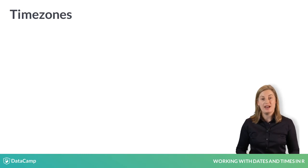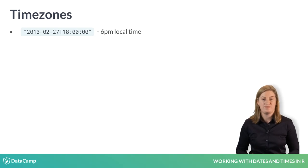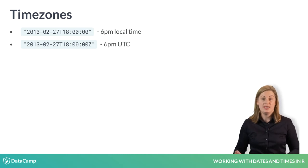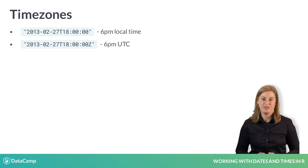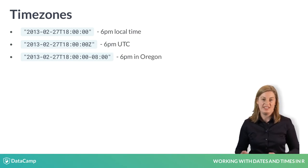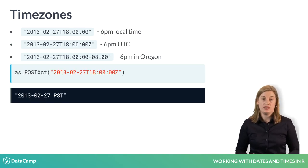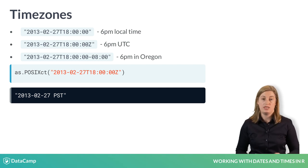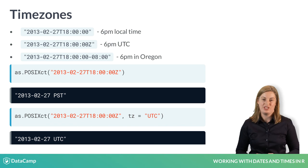ISO 8601 also allows the specification of a time zone. If no time zone is specified, it is assumed to be local time. The suffix Z on a time denotes UTC, short for Coordinated Universal Time, an international standard which doesn't observe daylight savings. Other time zones are specified in ISO 8601 as offsets from this time zone. Unfortunately, as.POSIXCT won't recognize the ISO 8601 specification of time zones — it will assume the local time zone, unless you set another one with the TZ argument. You'll learn more about time zones in Chapter 4.